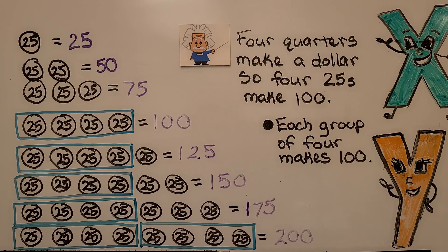What if we had 12 25's? Do you know how much that would make? Well, four makes 100. Eight makes 200. Twelve would make 300.